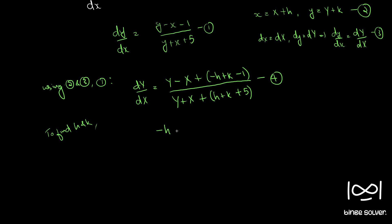To find h and k, we use: minus h plus k minus 1 equal to 0, and h plus k plus 5 equal to 0. Adding these two equations, h cancels out and we get 2k minus 1 plus 5 equals 0, so 2k equal to minus 4, therefore k equal to minus 2.